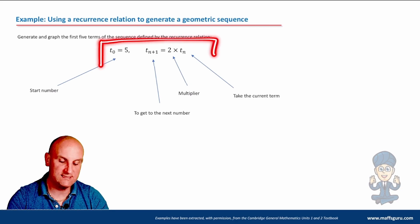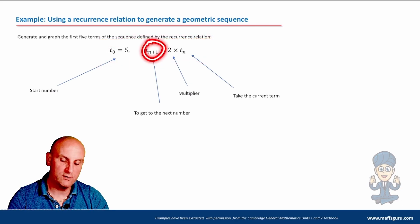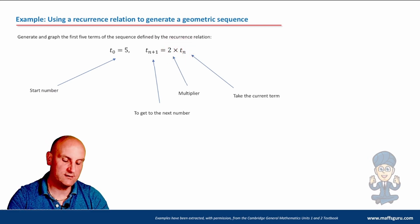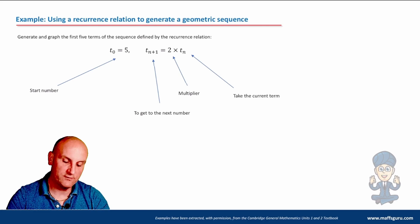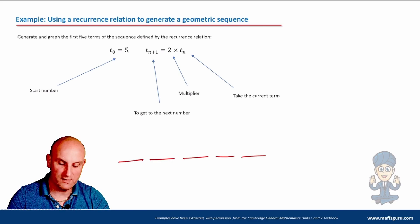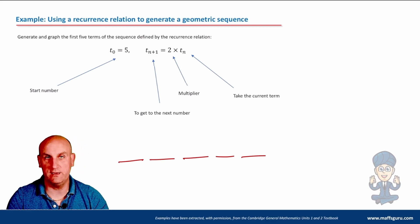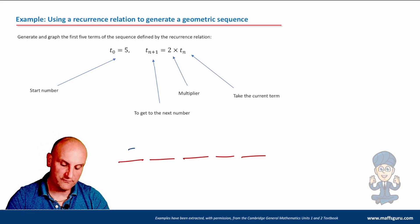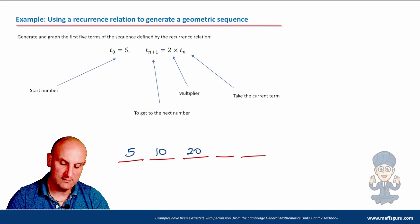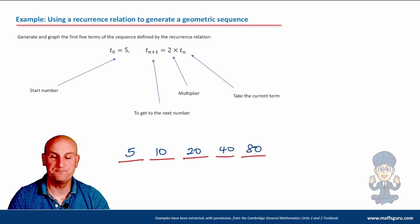Let's go back to using a recurrence relation to generate a geometric sequence. Here T₀ is my first term, and T_{n+1} equals the previous term times 2 — so we're doubling it. The task is to generate the first five terms and draw the graph. Starting from T₀ = 5: doubling gives 10, then 20, then 40, then 80. Those are my five numbers.